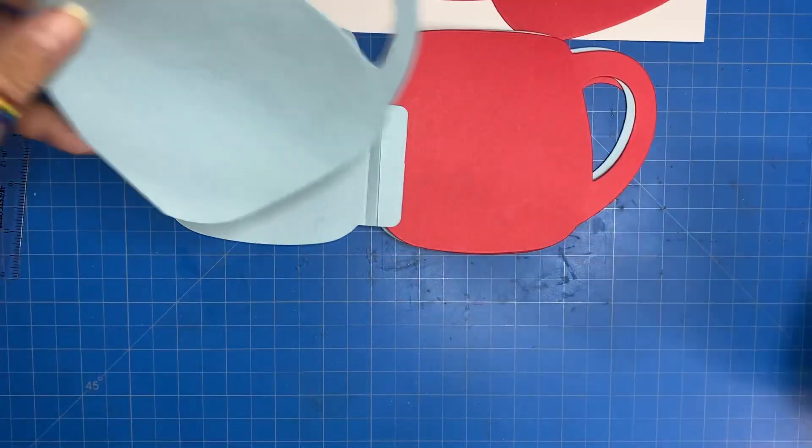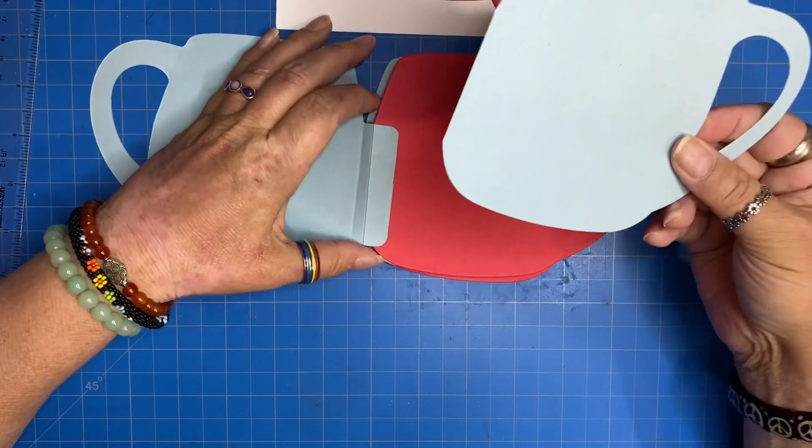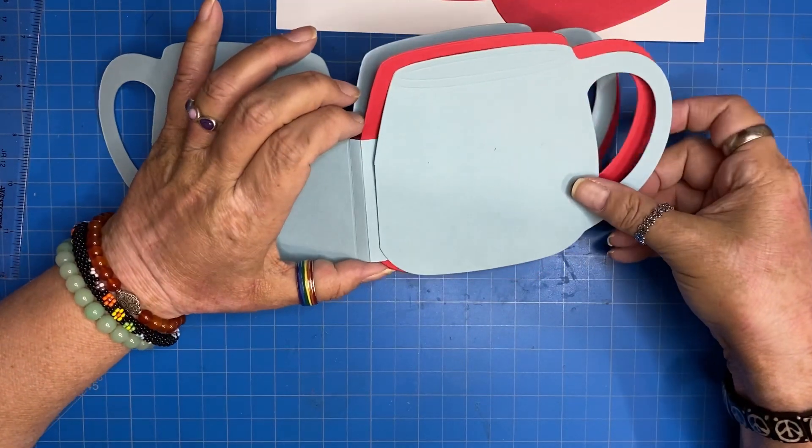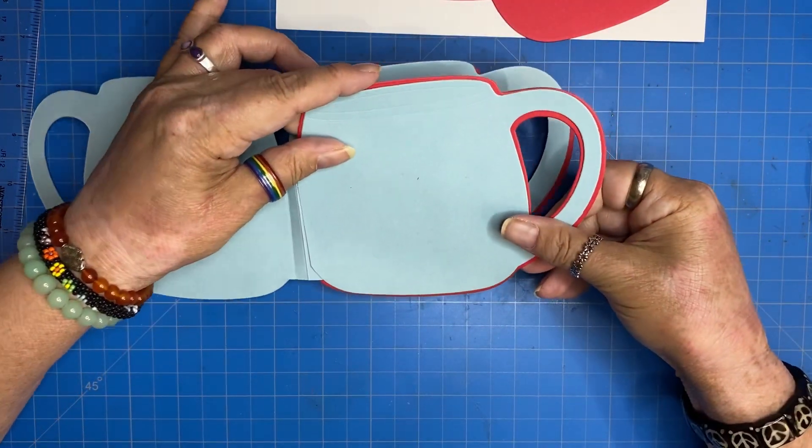And I would take my scissor and just cut along that line. Otherwise, you can do what I showed you before and make a cut. Glue in your page.